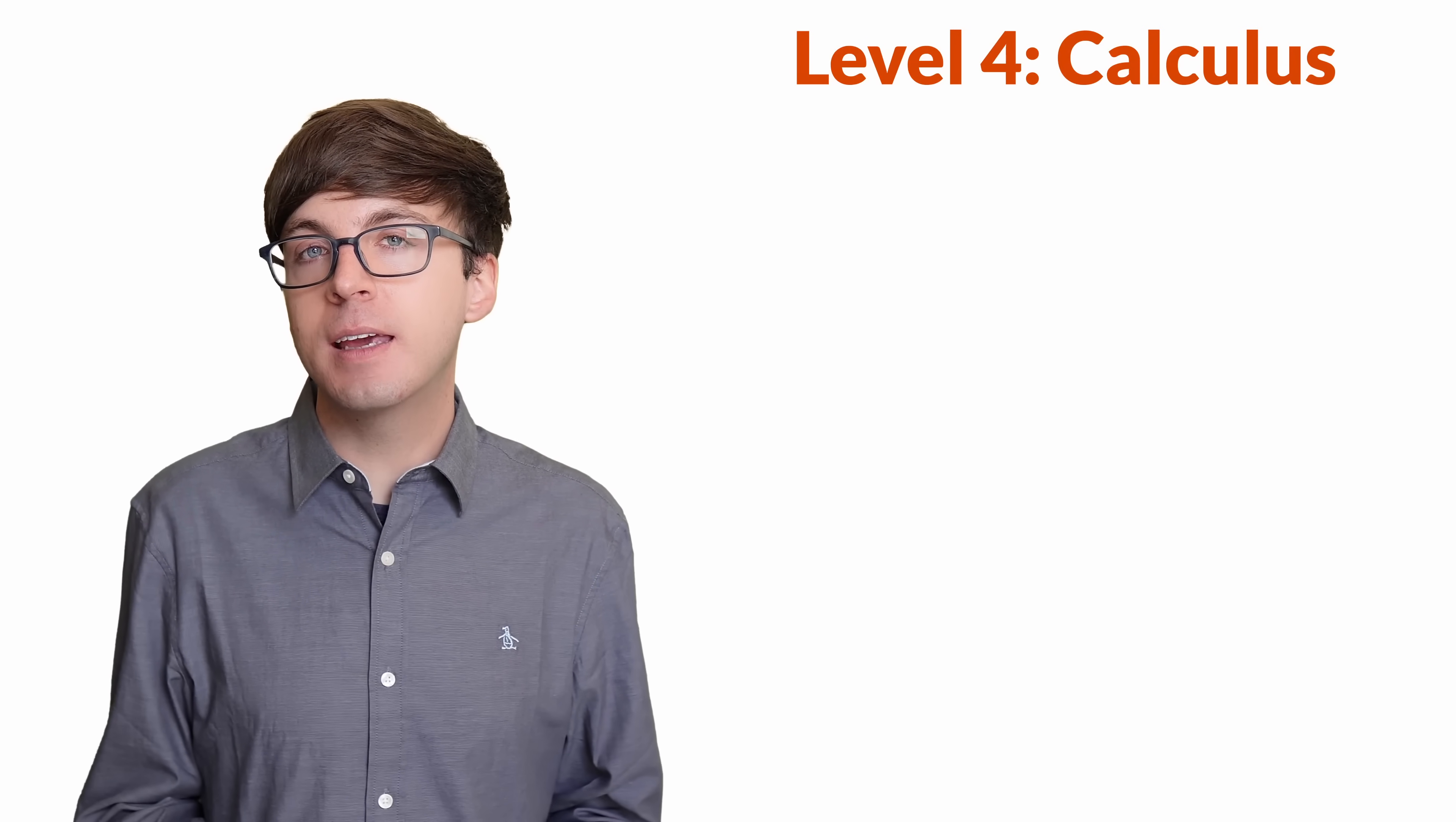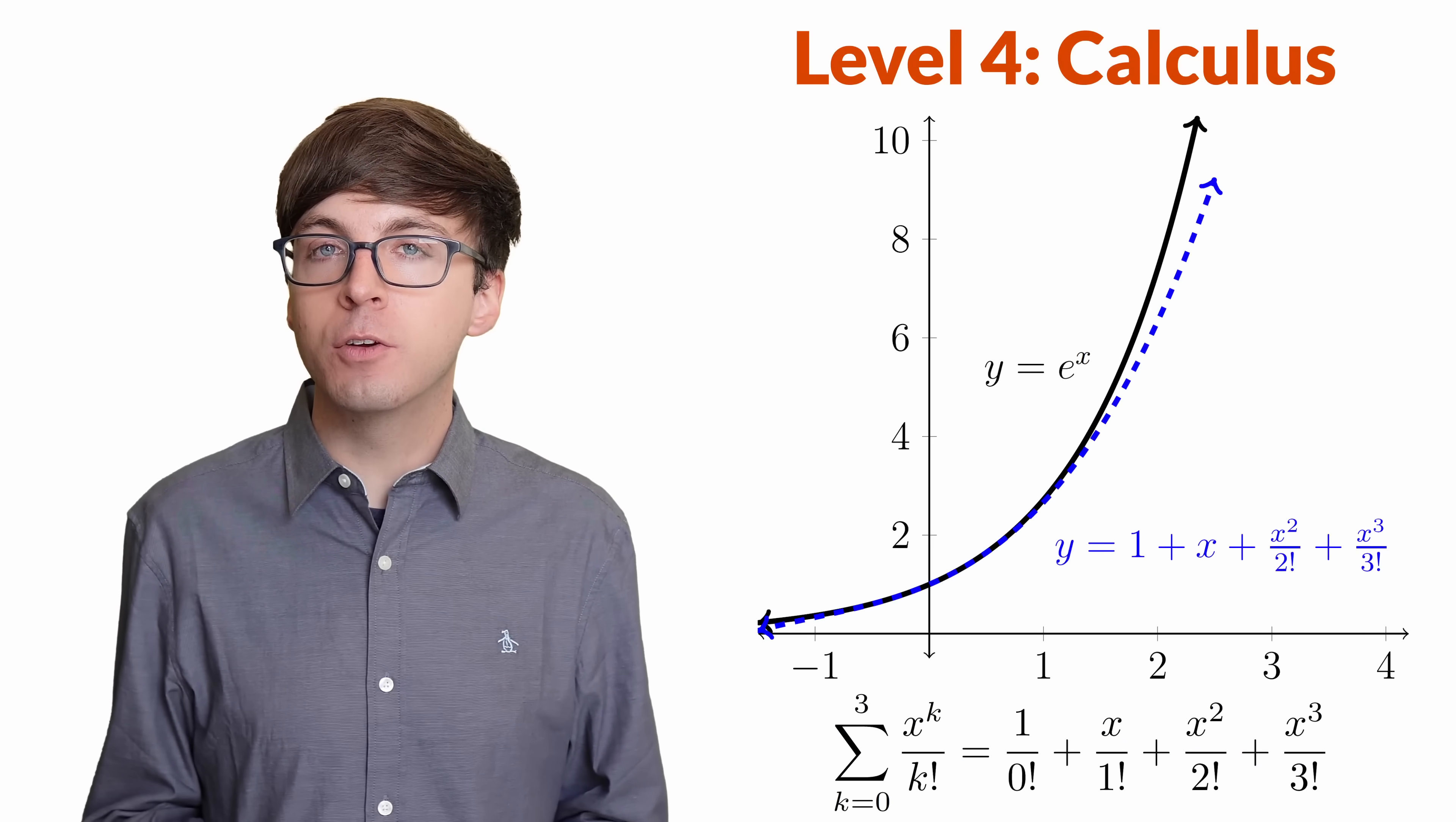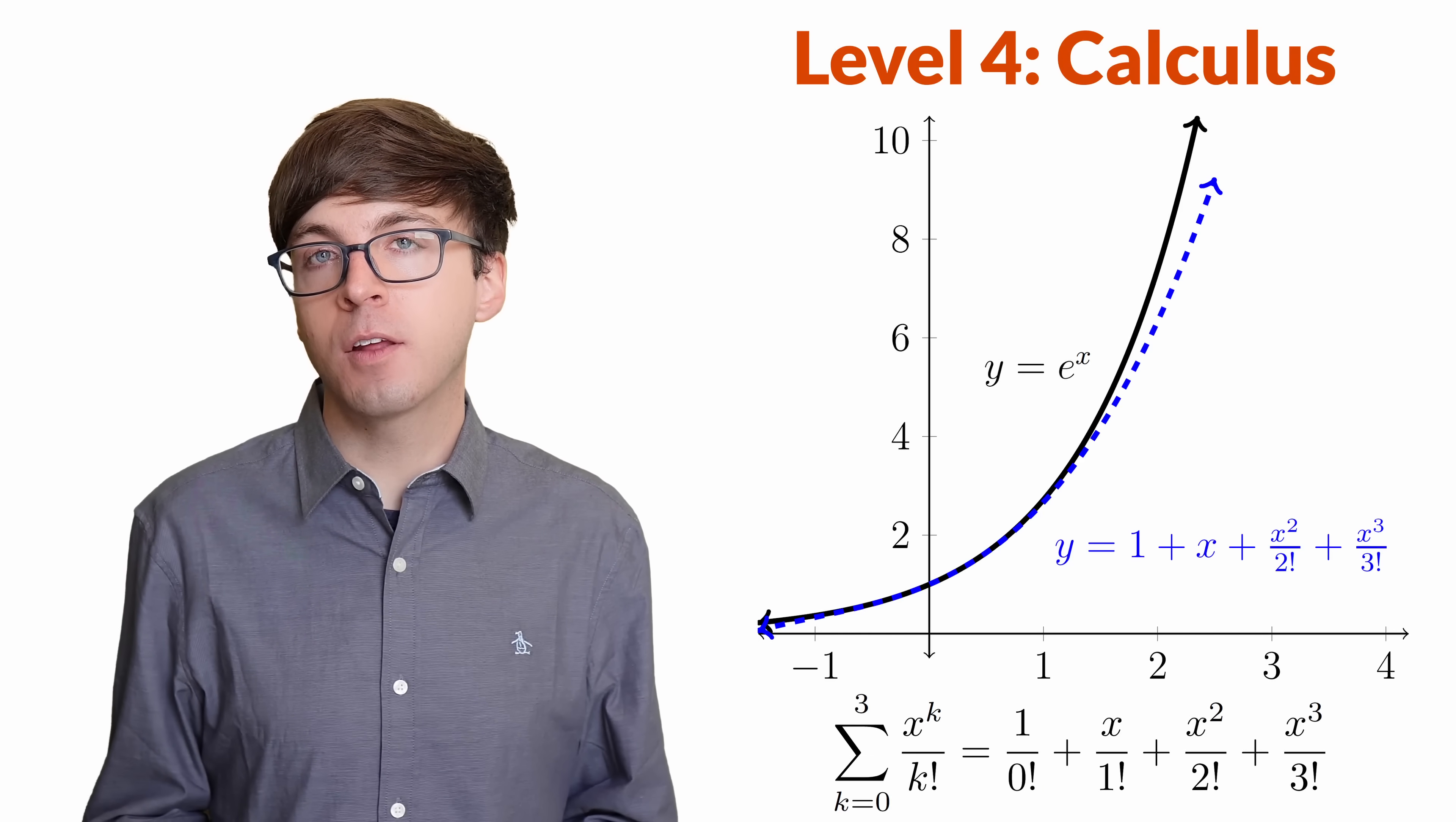For level 4, let's look at a situation in calculus where it's again convenient to define 0 factorial to be 1. In calculus, we learn how to approximate functions with Taylor polynomials. This is a way for us to approximate a complicated function around a point with a polynomial, like a line or a quadratic function. For example, here's the Taylor polynomial of degree 3 that approximates the function e to the x near 0. Notice the factorials in the denominators. If we define 0 factorial to be 1, then the pattern continues for this first term in the Taylor polynomial without needing to have a separate special case. This allows us to have a nice formula that covers all the terms in a Taylor polynomial.